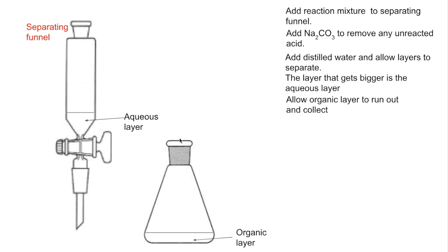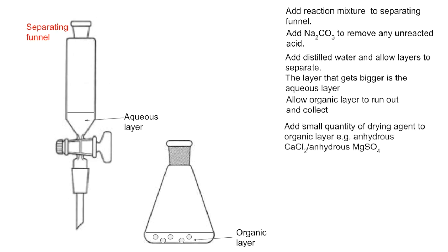There would still be some small traces of water in the organic layer, so we need to add a drying agent. The two specified by the exam board are either anhydrous calcium chloride or anhydrous magnesium sulphate. These can absorb any small amounts of water that are left in the sample. The final thing to do is to separate the solid drying agent from the liquid organic layer.